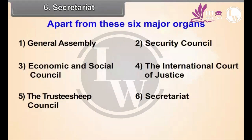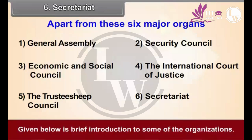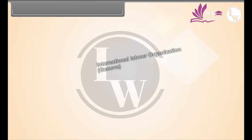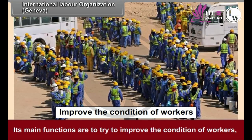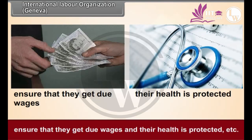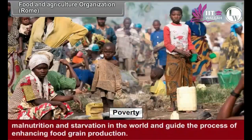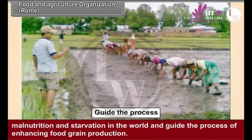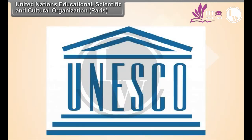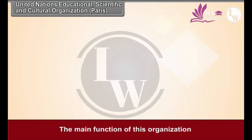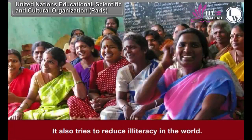Apart from these six major organs, many affiliated organizations of the UN are working in the areas of social and economic development. The International Labour Organization, headquartered in Geneva, works to improve the condition of workers, ensure that they get due wages and their health is protected. The Food and Agricultural Organization, based in Rome, works to solve the problem of poverty, malnutrition and starvation in the world and guide the process of enhancing food grain production. The United Nations Educational, Scientific and Cultural Organization promotes interaction between different countries in the fields of education, science and culture, and also tries to reduce illiteracy in the world.